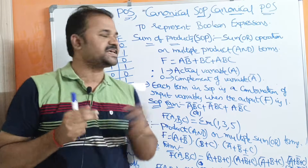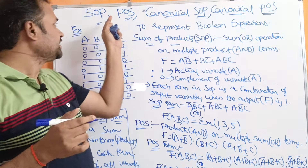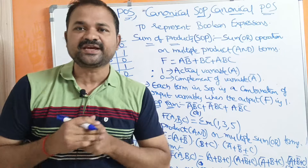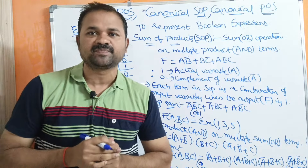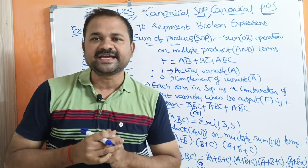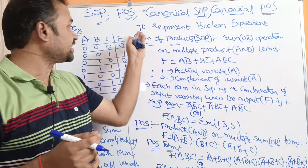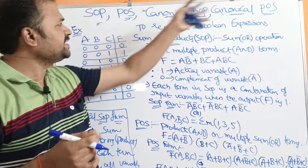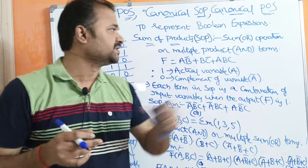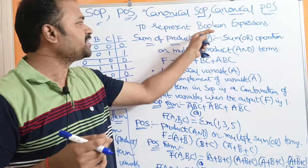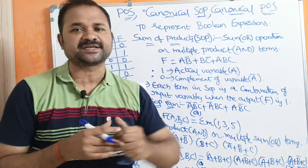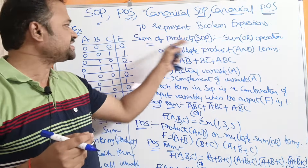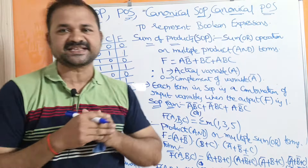Let us discuss about SOP, POS, Canonical SOP, and Canonical POS. All these are mainly useful in order to represent Boolean expressions. First, let us see what is SOP.